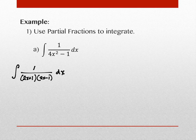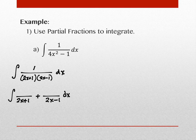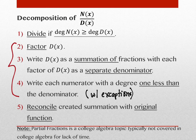Step three says to write the denominator as a summation of fractions — two separate fractions, one with each factor as the denominator. The point of partial fraction decomposition is to figure out what those numerators have to be. It's not obvious — you can't just guess and check. So we move to step four: write the numerators with degree one less than the denominator. The exception piece we'll see later doesn't apply yet.